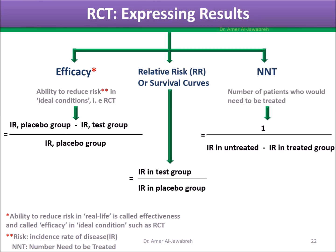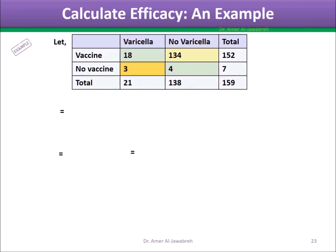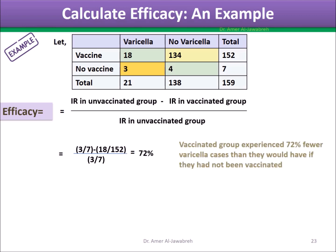Number needed to be treated (NNT) is calculated as 1 over the incidence rate in the untreated group minus the incidence rate in the treated group. How to calculate efficacy — an example: in a varicella vaccine RCT, the efficacy is the incidence rate in the unvaccinated group minus the incidence rate in the vaccinated group, divided by the incidence rate in the unvaccinated group. Efficacy is 72%. Another method of calculation is 1 minus relative risk.